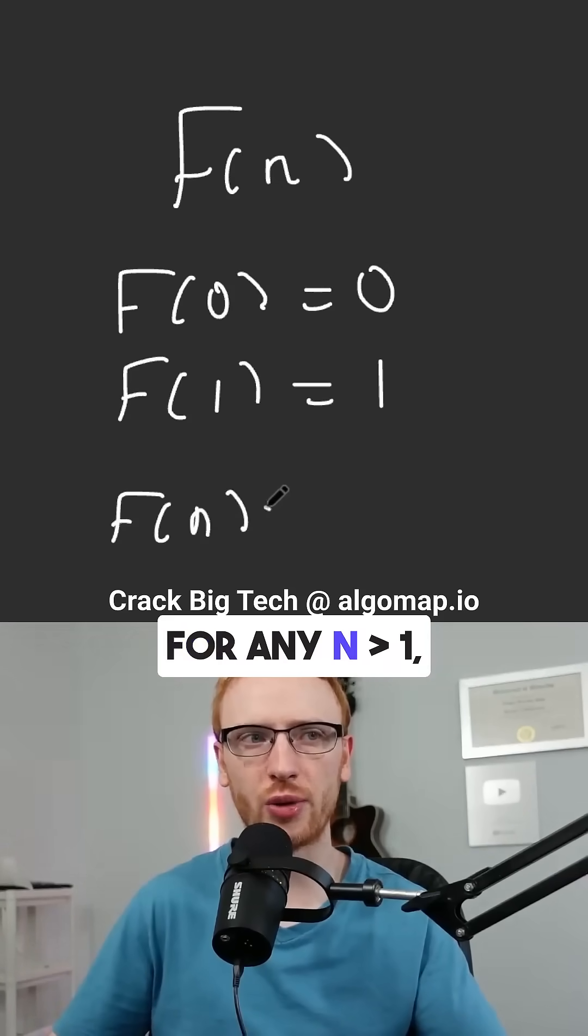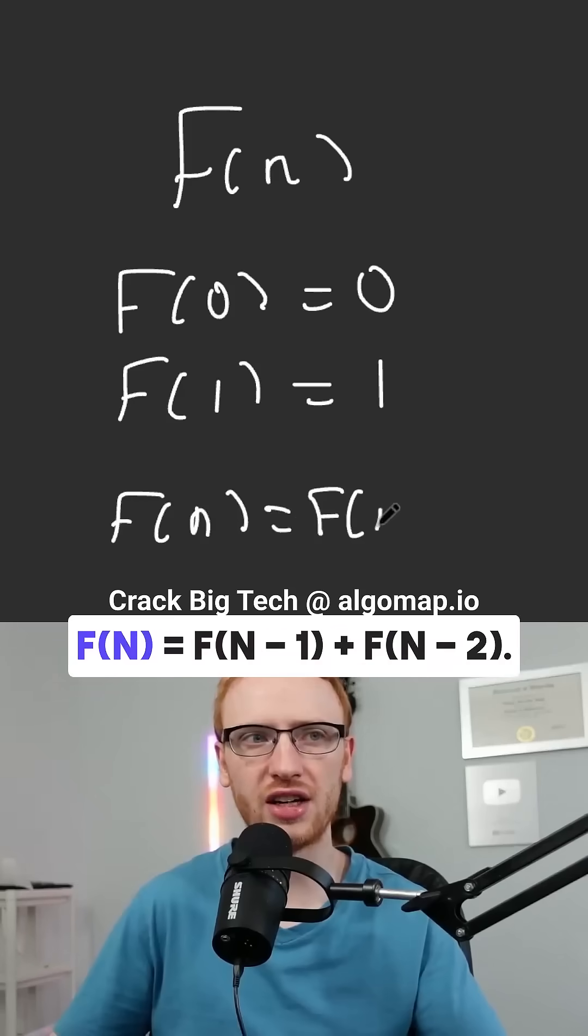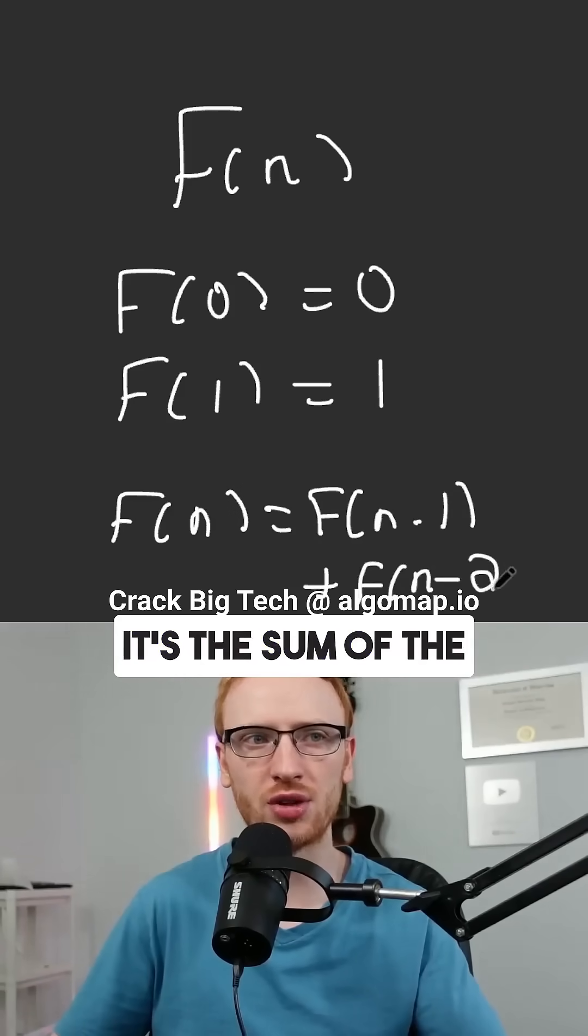But more generally, for any n greater than 1, we have that f at n is f at n minus 1 plus f at n minus 2. It's the sum of the previous two values.